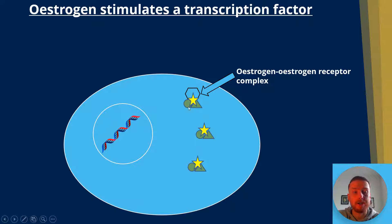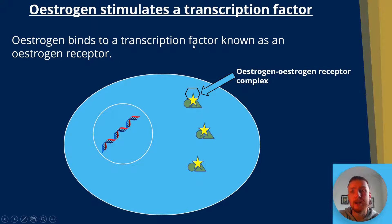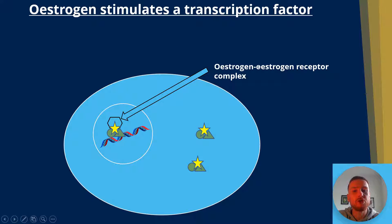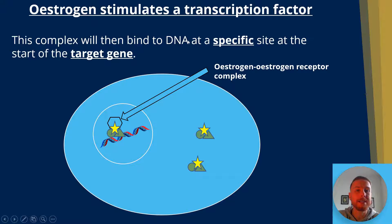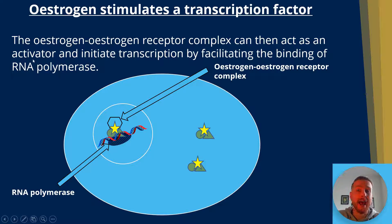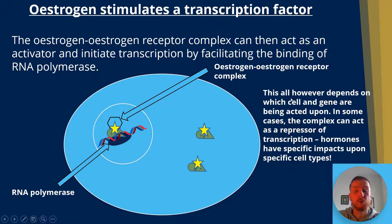When oestrogen binds to the transcription factor, this will form an oestrogen-oestrogen receptor complex. So oestrogen binds to a transcription factor known as an oestrogen receptor. The oestrogen-oestrogen receptor complex can then enter the nucleus and bind to DNA at a specific site at the start of the target gene — we've represented the DNA as a double helix with our complex there. The complex can then act as an activator and initiate transcription by facilitating the binding of RNA polymerase. However, this depends on which cell is being targeted; in some cases the complex can actually act as a repressor.